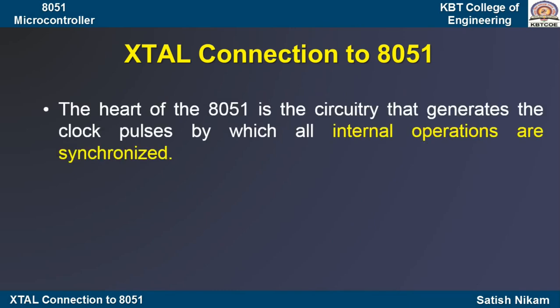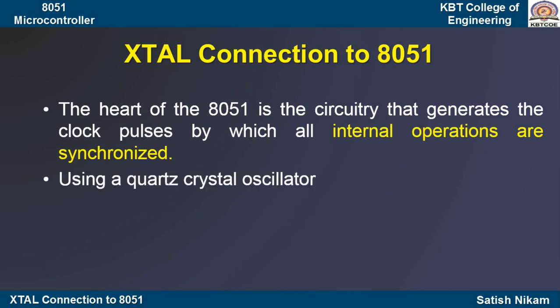The heart of the 8051 is the circuitry that generates the clock pulses by which all the internal operations are synchronized. Whatever different blocks are present in the 8051 hardware, they are all digital systems and are supposed to operate synchronously. To make it synchronous, we have to connect the clock frequency. This can be done by two different ways.